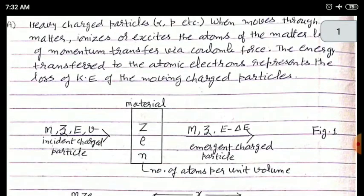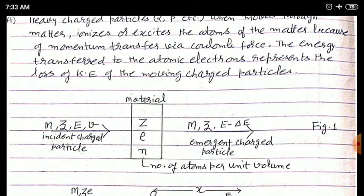Consider an incident charged particle having mass M, proton number Z, energy E, and velocity V, passing through a material having proton number capital Z, density rho, and n is the number of atoms per unit volume of the material. When the heavy charged particle emerges from the material, it will lose some of its energy — mass and proton number remain the same, but energy is reduced, shown as E minus delta E in the diagram.